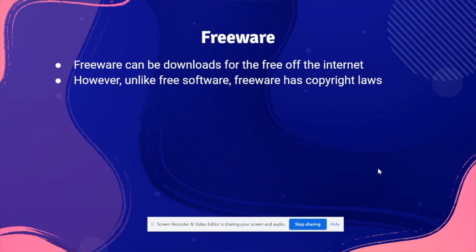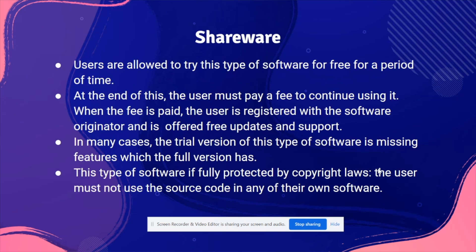Shareware allows users to try a software for a free trial period. At the end of this trial period, the user must pay a fee to continue using it. If you're happy with the software, you pay the fee and own it. Once you pay, you become a registered user — you're using it legally and are offered updates and support, because you've paid for it.